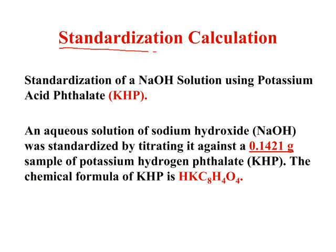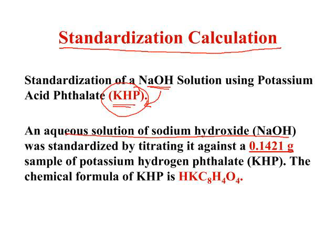Let's go through how you do a standardization calculation, because unless you've standardized your substance you will not be able to use it to titrate. We're going to use potassium acid phthalate, abbreviated KHP, to standardize our NaOH. We make an aqueous solution of sodium hydroxide and standardize it by titrating it against KHP. The mass of KHP we're going to use is 0.1421 grams. This is the actual formula for KHP — you've got your potassium, hydrogen, and the phthalate ion.